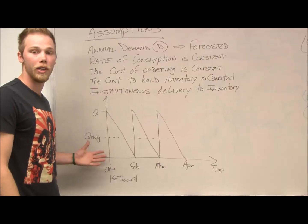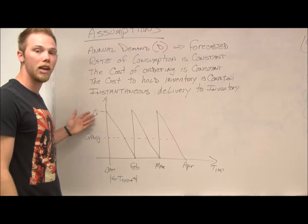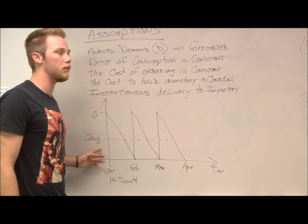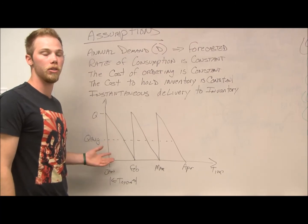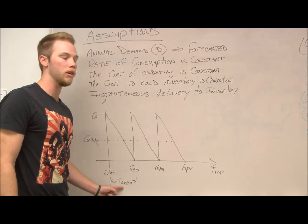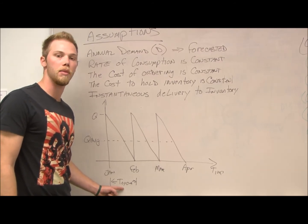Here on the board we have an EOQ diagram. Q indicated here and Q average indicated here. Q average, you've also seen before, is the equation Q divided by 2. And we have down here on this axis T-cycle. T-cycle is your time in between orders.